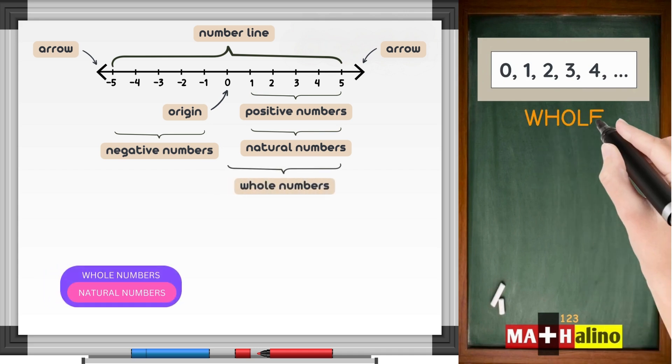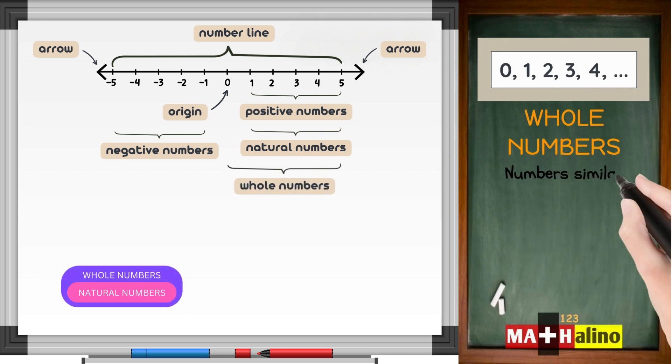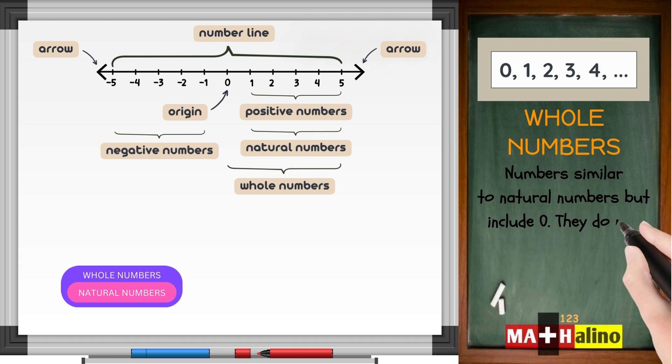Whole numbers. Numbers similar to natural numbers but include zero. They do not have fractions, decimals, or negative numbers.